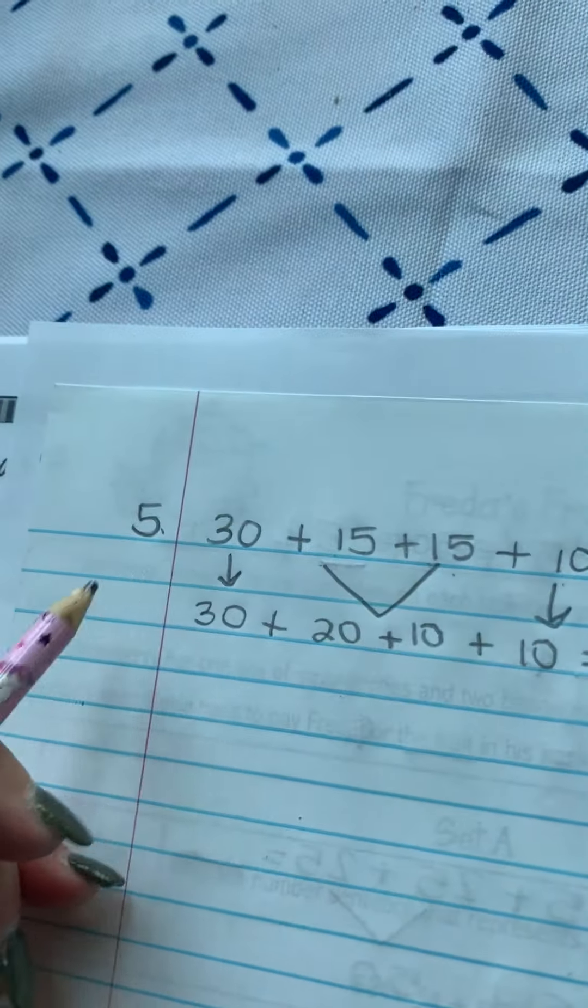Then I can just add by tens to find my answer. 30 plus 20 plus 10 plus 10, and that's your final answer.